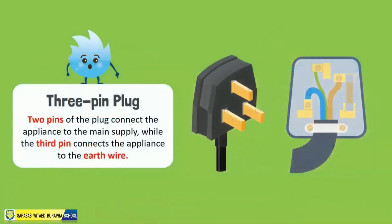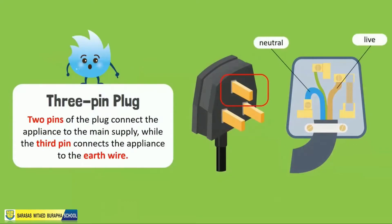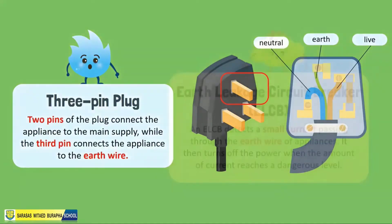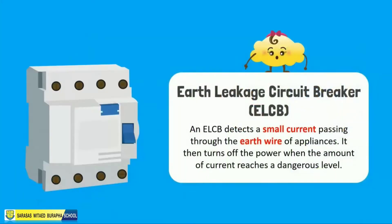Let's discuss the three-pin plug. Two pins of the plug connect the appliance to the main supply, while the third pin connects the appliance to the earth wire. The earth wire serves a similar function — it sends excess current into the ground, thus preventing electric shocks.